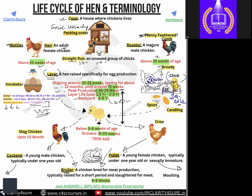Once the chick grows beyond eight weeks, from nine to twenty weeks they are called growers. We can call this the teenage of the hen. So: zero to eight weeks is chick, nine to twenty weeks is the teenage grower stage, and after twenty weeks they become mature adults.